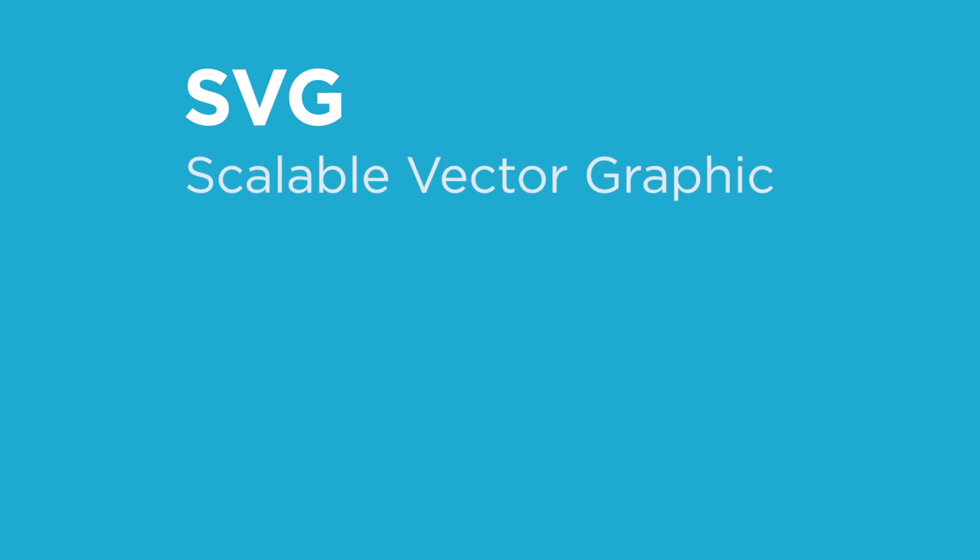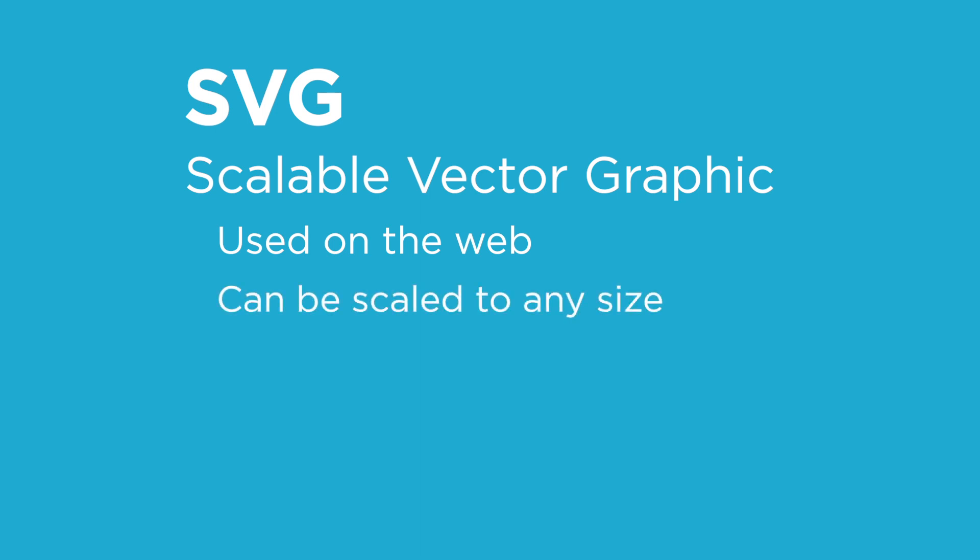Next is SVG, which stands for Scalable Vector Graphic. It's a vector file that can be used on the web as an image file and can be scaled to any size. That's nice because you don't have to make a lot of different sizes — if you're using a logo in several places, it can be as big or small as you need and the quality won't change. SVGs can also be manipulated with CSS styling, so a web developer can change the color of a logo using CSS on an SVG file.